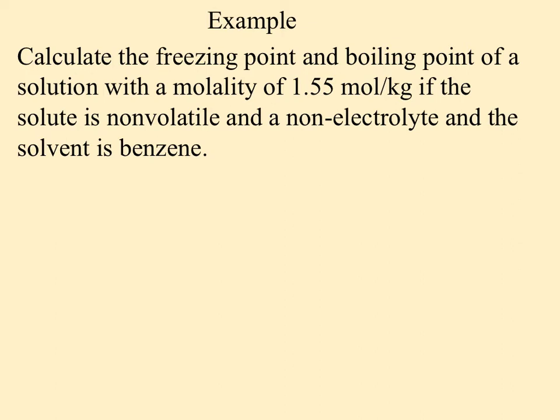Looking at this example, we see it says calculate the freezing point and the boiling point of a solution with a molality of 1.55 moles per kilogram. If the solute is non-volatile and non-electrolyte, that's just letting you know that this is a covalent solute that is going to have an effect. Non-electrolyte is your hint that it's covalent. Non-volatile, they often throw that in just to let you know that it's not a gas that's going to escape easily and have no effect on the solvent. And then you're given the identity of the solvent, which is benzene.